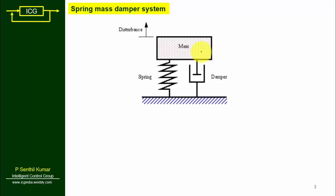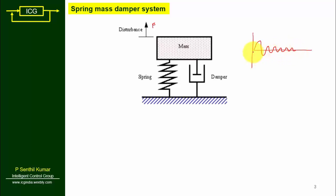If we apply a disturbance force F on the mass, the mass will vibrate. This is an example of a dynamic system. Our aim is to find the response — the displacement of the mass — over a period of time. For this purpose we are building a mathematical model.